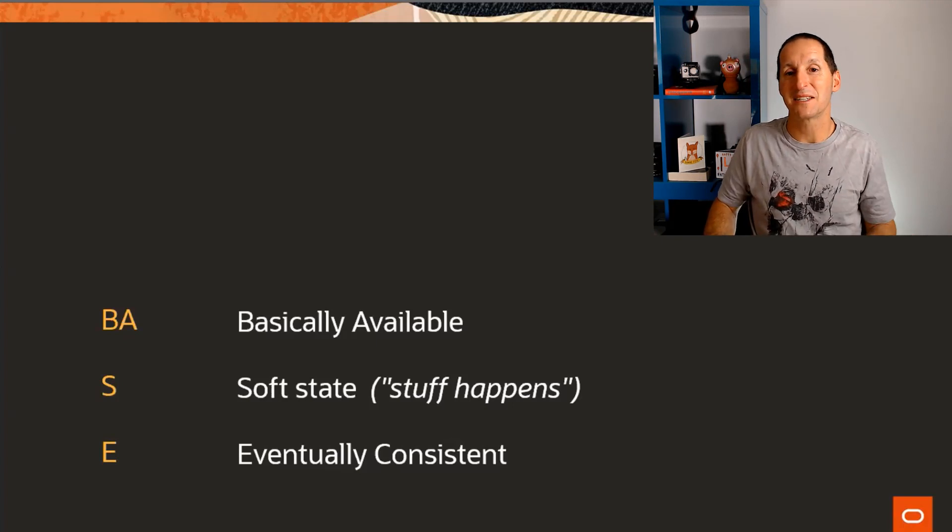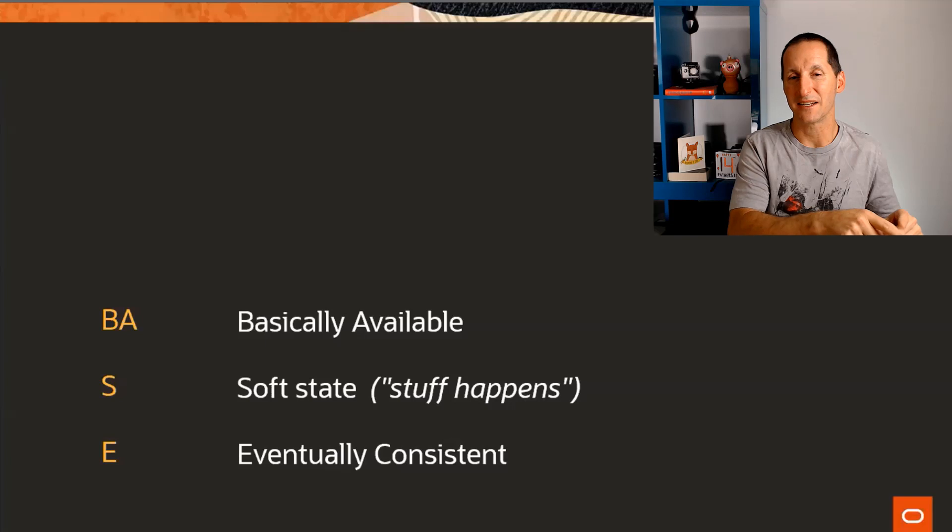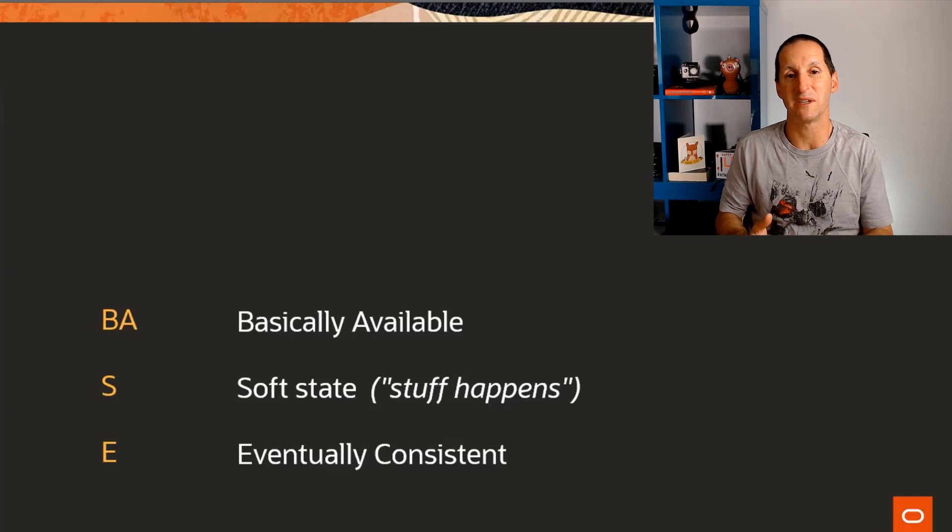And soft state really means stuff happens in the background without your knowledge. And what that means is I might make a change to the data on one node and that's all I did as a user or as an application. But behind the scenes, that data will be passed across other nodes to become effectively consistent over time, which leads to the E, which is eventually consistent. So we have ACID versus BASE. ACID generally being the relational database theory, BASE being the more typical thing of NoSQL.